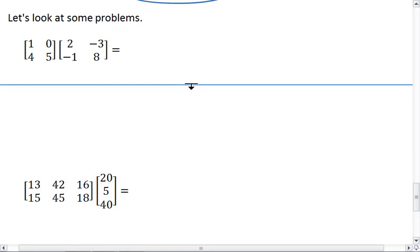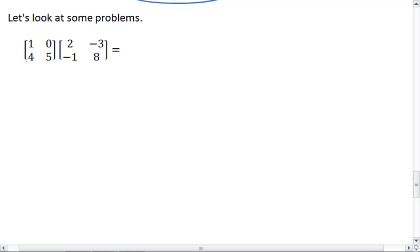This is the general procedure. First, we want to check. We have a 2 by 2, 2 by 2, so that checks out. Our two middle numbers are the same. We're good, and this should give us a 2 by 2 matrix.